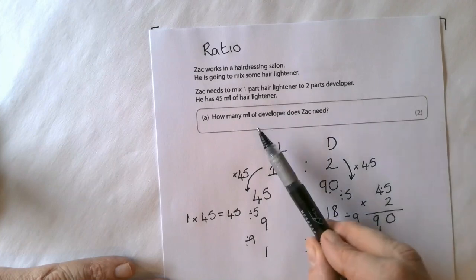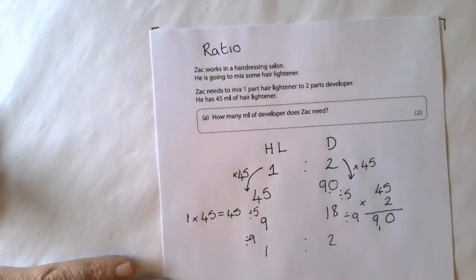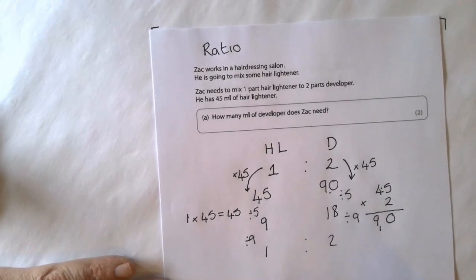To make sure the answer is correct, how many millilitres of developer does that need? Well, he needs 90 millilitres of developer.